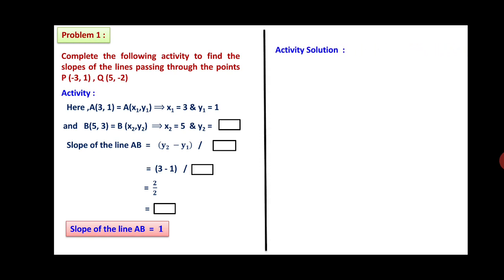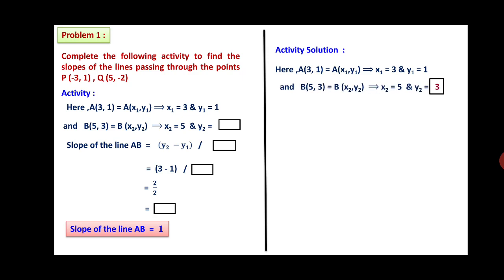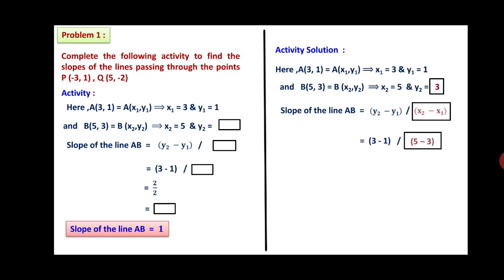We will now complete the solution of this activity. A(3, 1) gives x1 = 3 and y1 = 1. B(5, 3) gives x2 = 5 and y2 = 3; the answer in the box is 3. Slope of line AB equals (y2 minus y1) divided by (x2 minus x1) equals (3 minus 1) divided by (5 minus 3), which is 2 upon 2. So the answer is 1. The slope of the line is 1. You have to replicate the answers in the boxes.